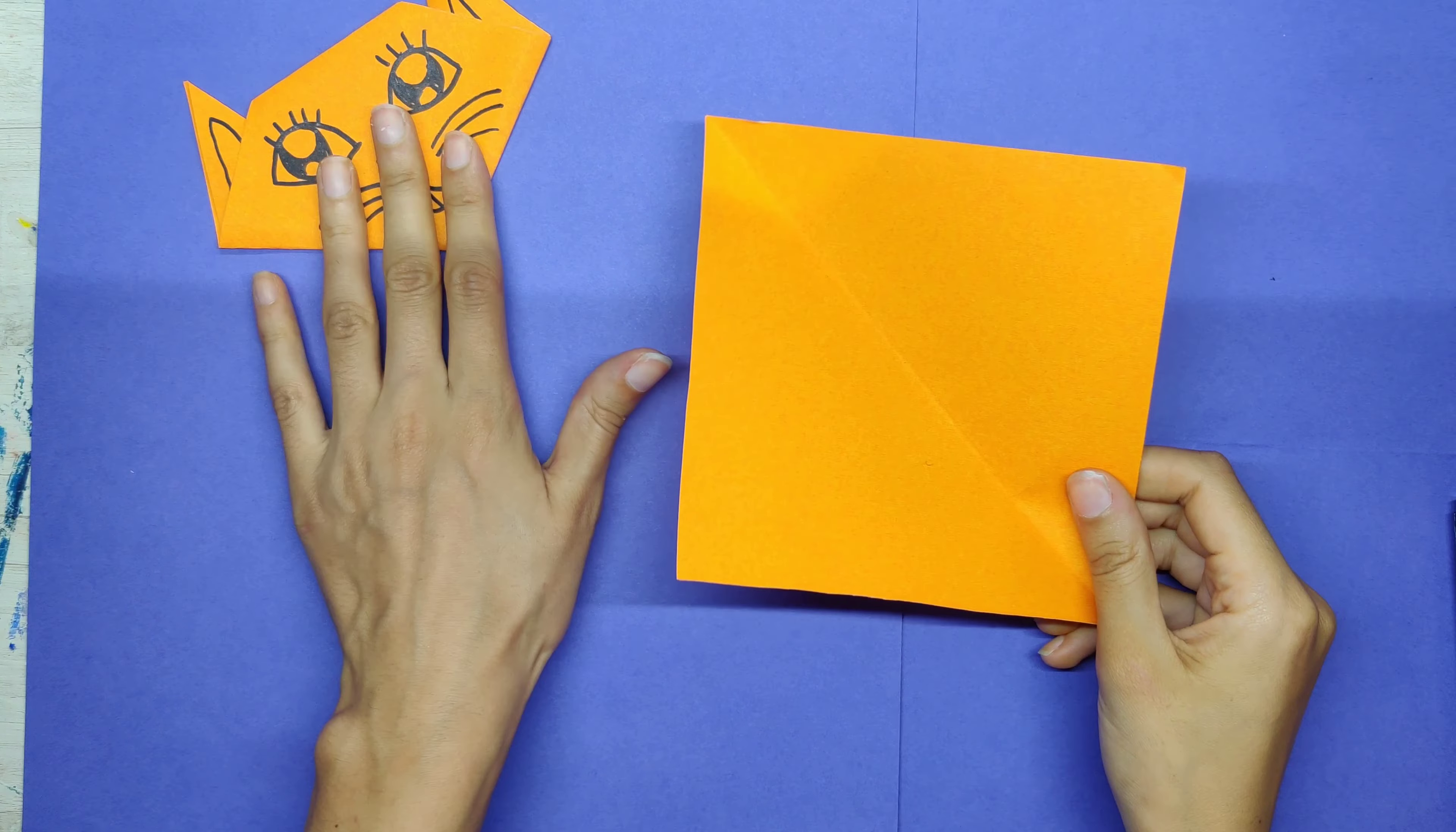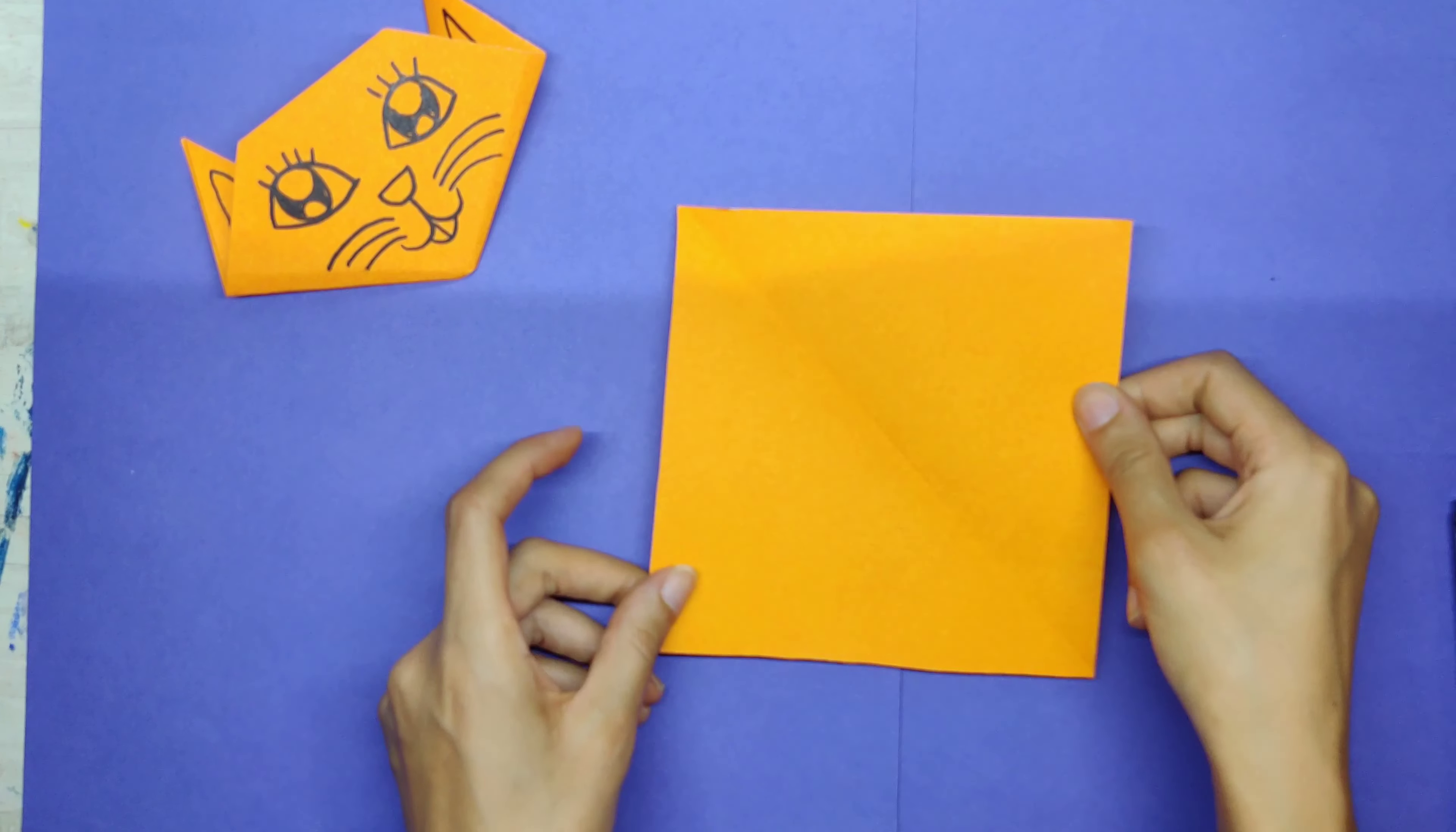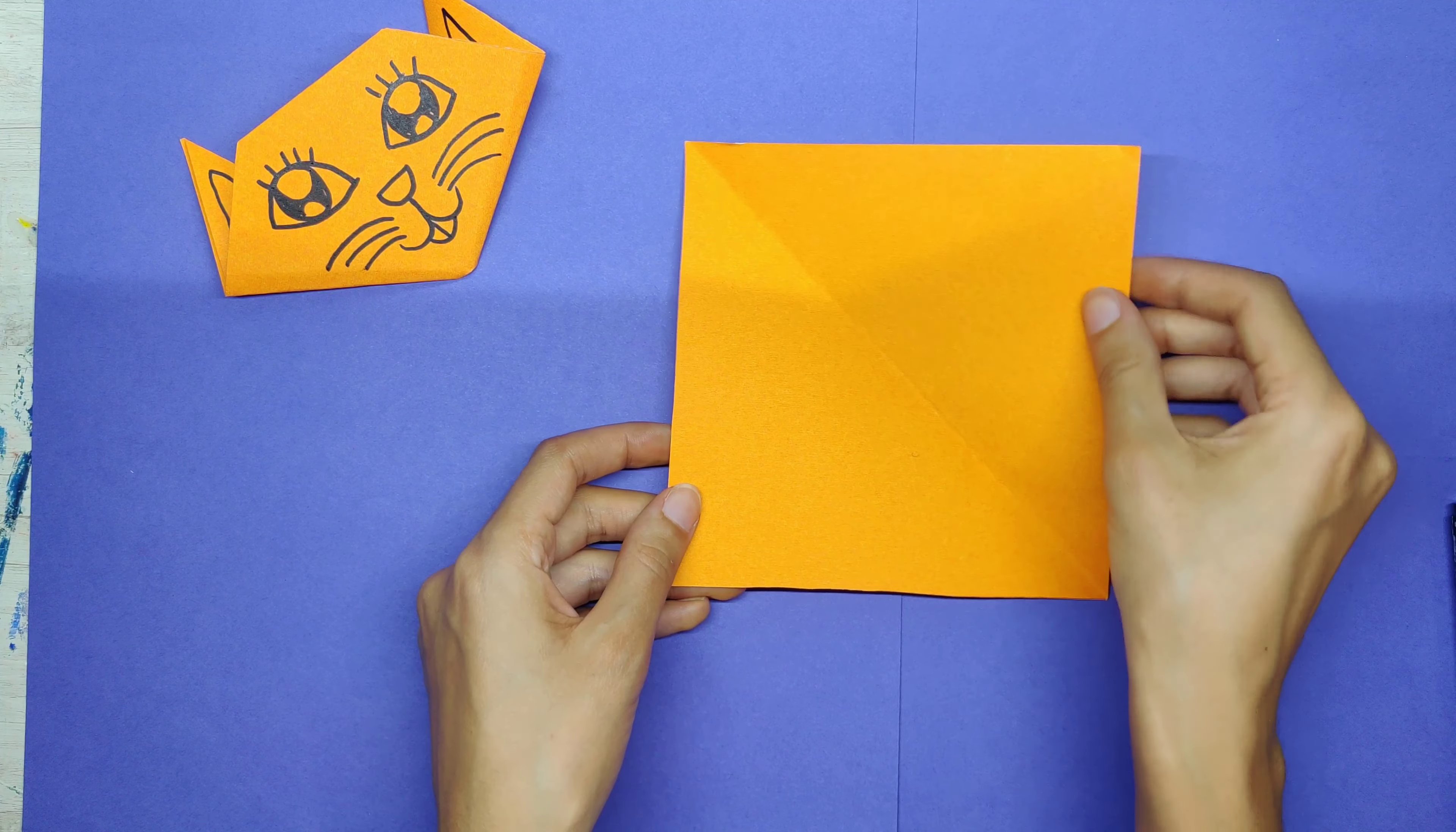Now that I'm done with the head, I can start with the body. You remember the square we have made first, the folded one. The body part is very, very easy. You are going to keep it folded just like we did in the beginning.